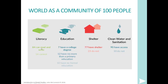On literacy, 84% can read and write. In terms of education, getting a college degree puts you in a small group globally — 10% have no formal education and 12% have no more than a primary education. On shelter, 77% of people in the world have shelter and 23% do not. 90% have access to clean water and 10% do not — and interestingly, there are people in America who also lack access to clean water and sanitation.